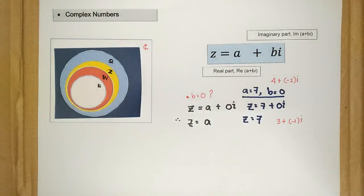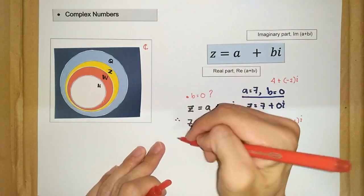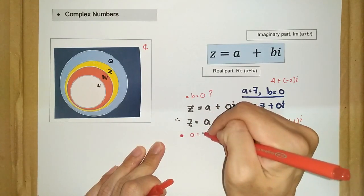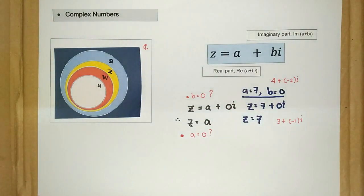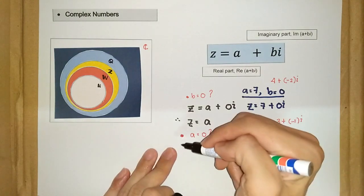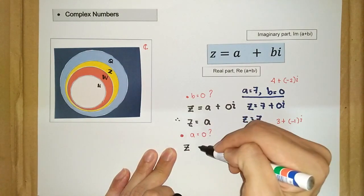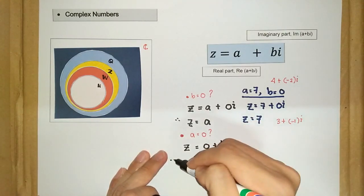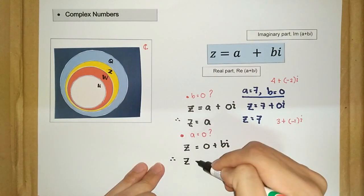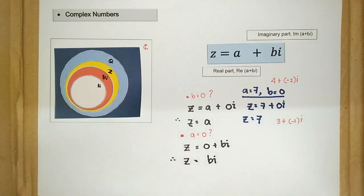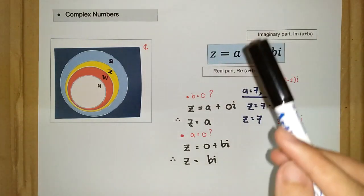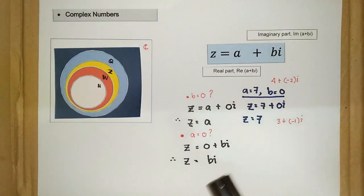The second situation is when a is equal to 0. What happens is z equals 0 plus bi, which is also equal to bi. This means the real part is equal to 0, and the only part that remains is the imaginary part.